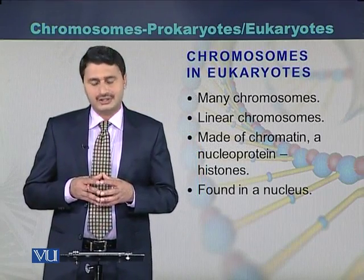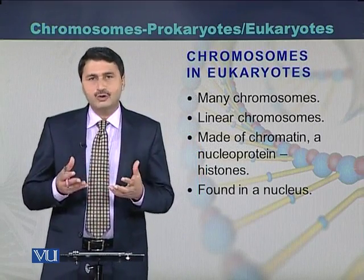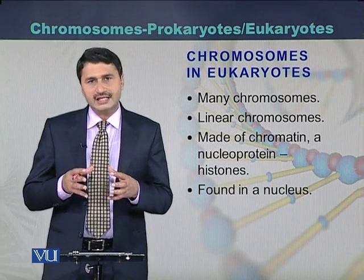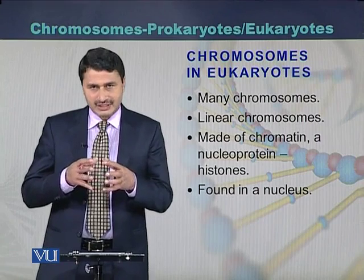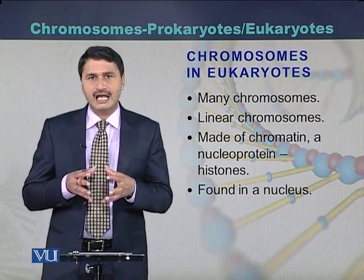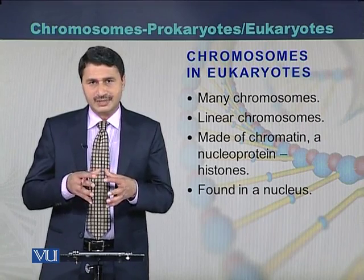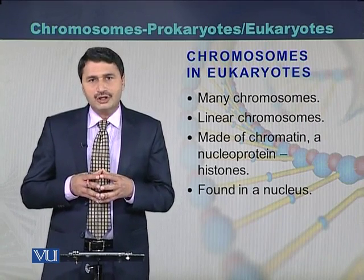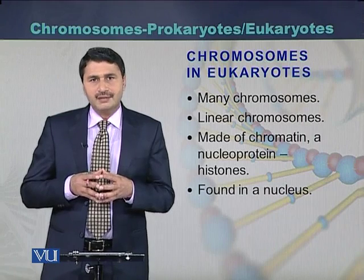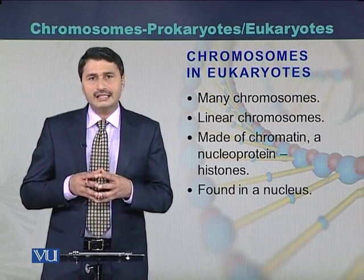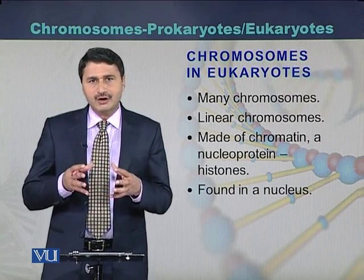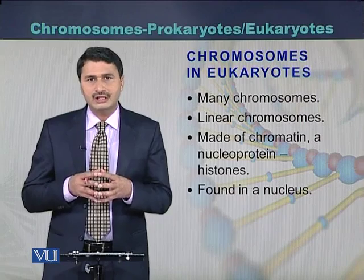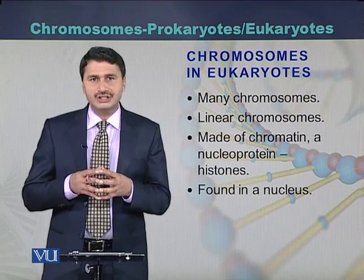In eukaryotic cells, there are many chromosomes present within the nucleus. Eukaryotic chromosomes are made up of chromatin, which is a fiber made of DNA as well as certain proteins. The name of these proteins is histones.